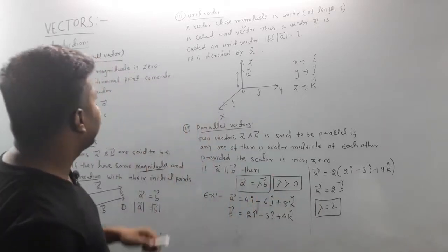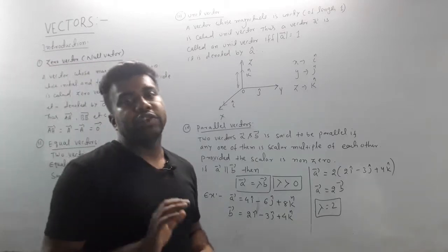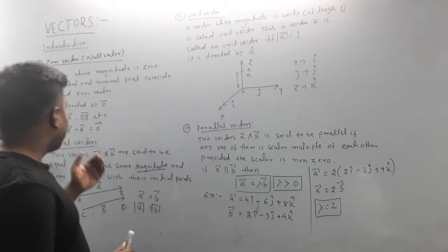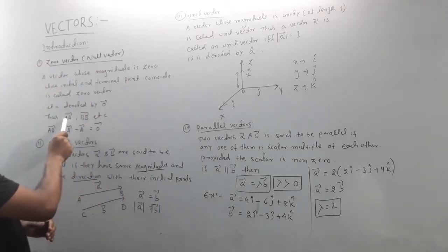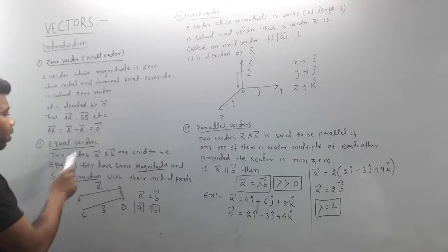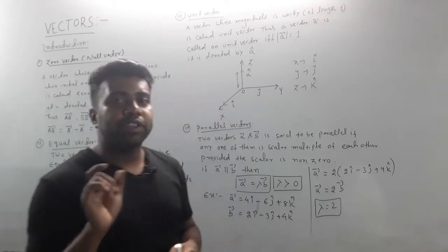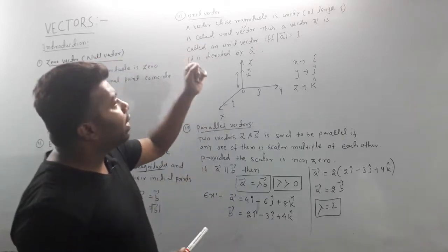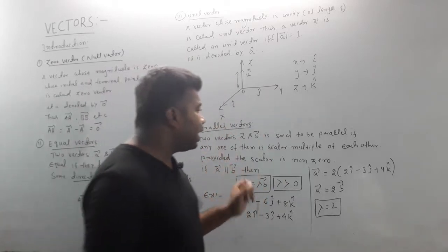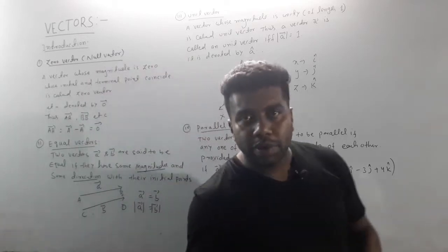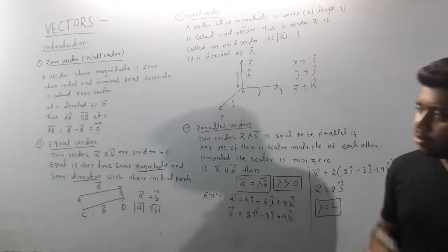To summarize the types so far: zero vector — initial and final point are the same; equal vector — same magnitude and same direction; unit vector — mod equals 1; parallel vector — two vectors follow the relation A equals lambda times B.